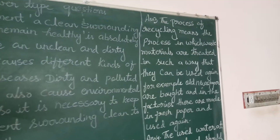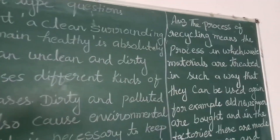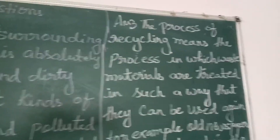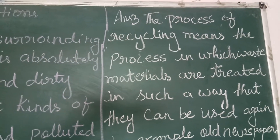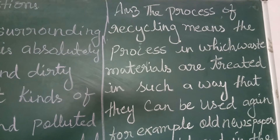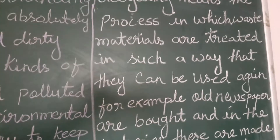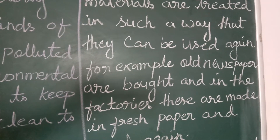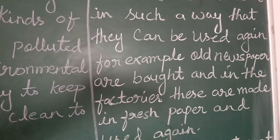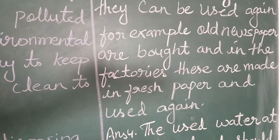Question number C: What is the process of recycling? Answer: recycling is the process in which waste materials are treated in such a way that they can be used again. For example, old used paper is processed in factories and made into fresh paper to be used again.